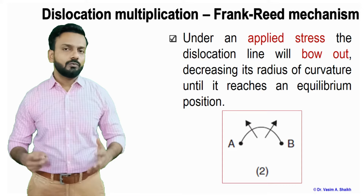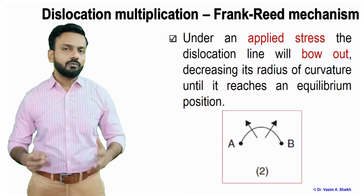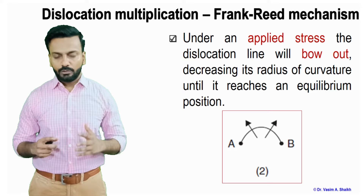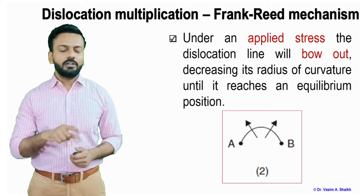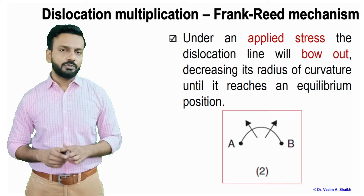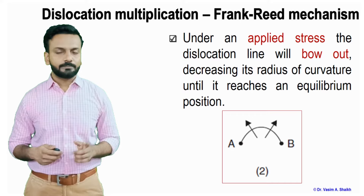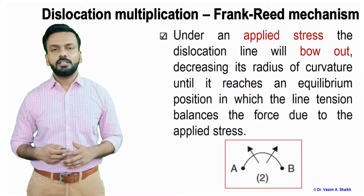If a stress is applied in between these two nodes, what will happen? If the stress is applied, the dislocation will move beyond the nodes and it will try to bend or bow out. Under any applied stress, the dislocation line will bow out, decreasing its radius of curvature until it reaches an equilibrium position. As we apply more and more stress, this dislocation line will bow out more and more.